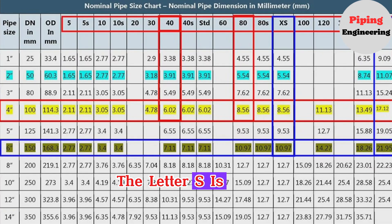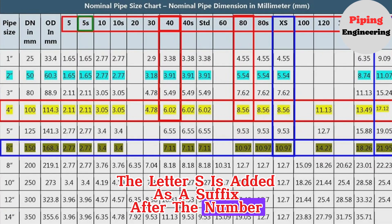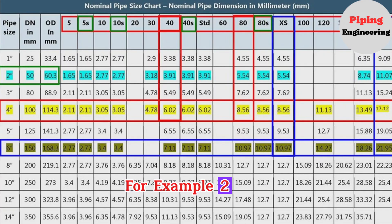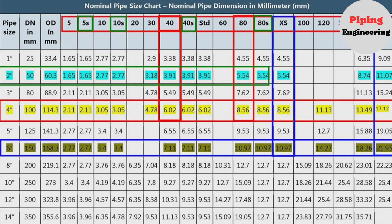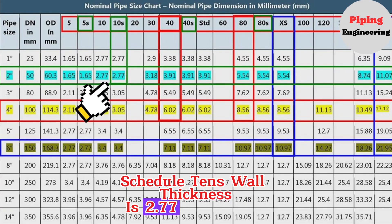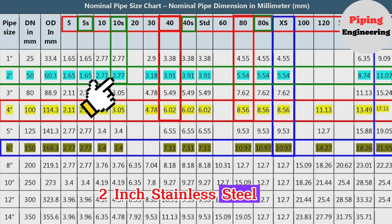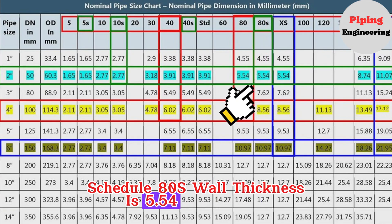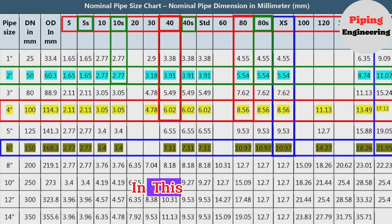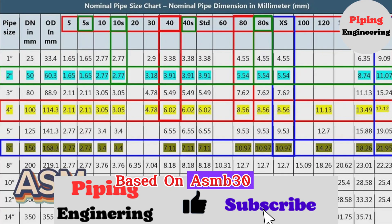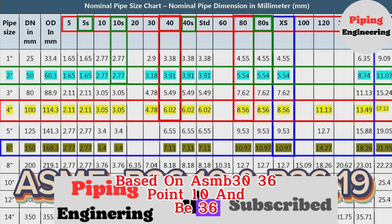Additionally, the letter S is added as a suffix after the number to define stainless steel piping schedules. For example, a 2-inch stainless steel pipe Schedule 10S has a wall thickness of 2.77 mm, and a 2-inch stainless steel pipe Schedule 80S has a wall thickness of 5.54 mm. This table summarizes the available schedule numbers for carbon steel and stainless steel pipe based on ASME B36.10 and B36.19.